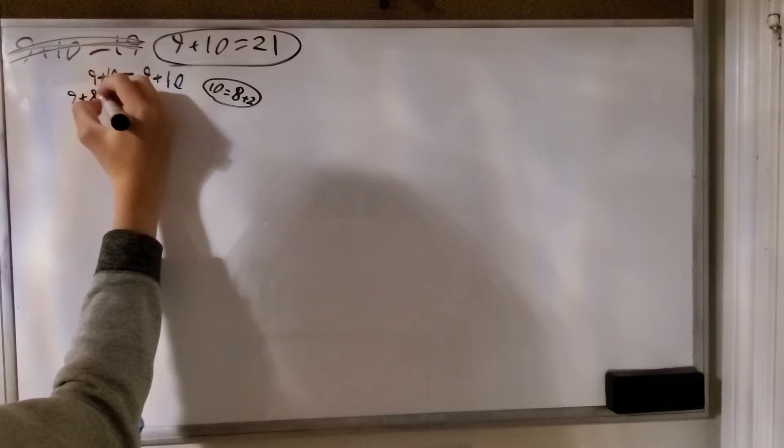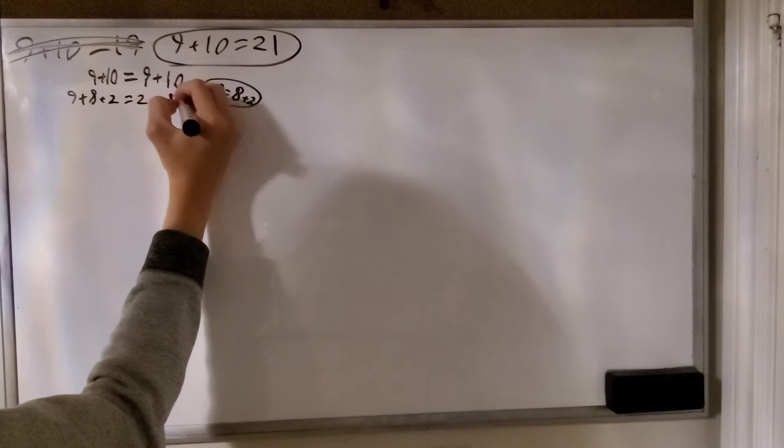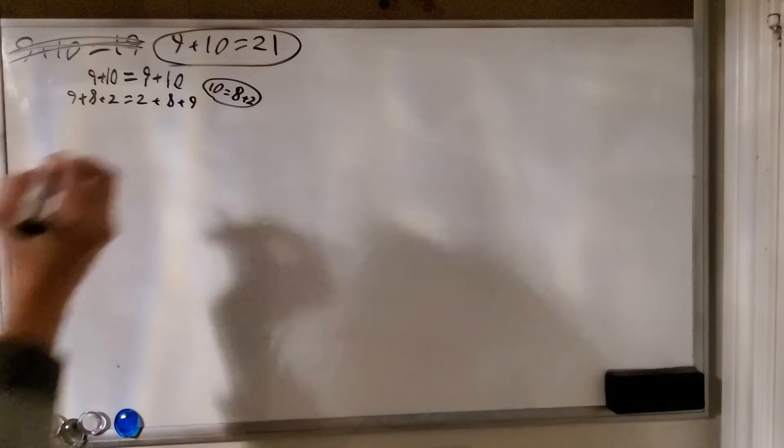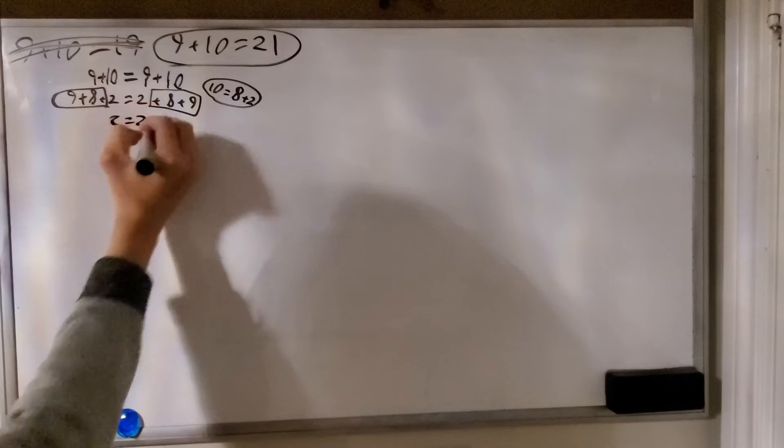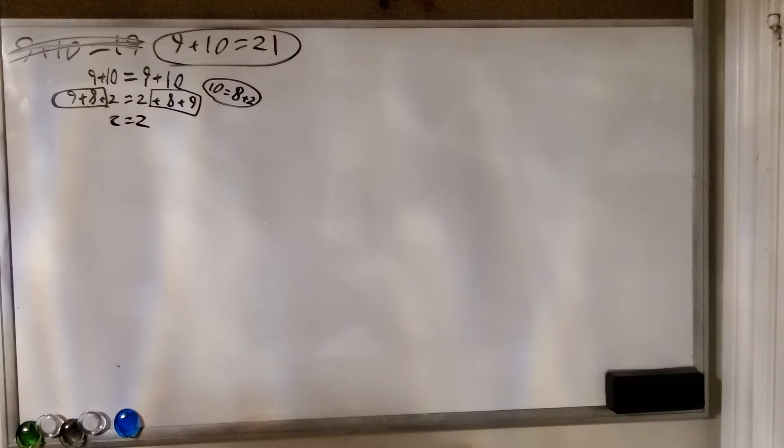And I think that we can also agree that 10 is equal to 8 plus 2. So let's just expand this a little bit. Now let's get rid of the 8 plus 9 on both sides first. And as you can see, the equality is still true. 2 is indeed equal to 2.